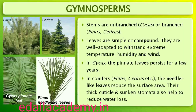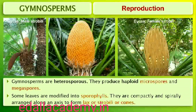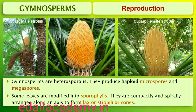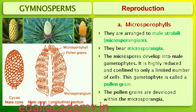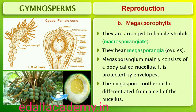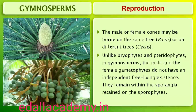The gymnosperms are heterosporous; they produce haploid microspores and megaspores. The two kinds of spores are produced within sporangia that are borne on sporophylls, which are arranged spirally along an axis to form lax or compact strobili or cones. The strobili bearing microsporophylls and microsporangia are called microsporangiate or male strobili. The microspores develop into a male gametophytic generation which is highly reduced and confined to only a limited number of cells. This reduced gametophyte is called a pollen grain; its development takes place within the microsporangium. The cones bearing megasporophylls with ovules or megasporangia are called megasporangiate or female strobili. The male or female cones or strobili may be borne on the same tree (Pinus); however, in Cycas, male cones and megasporophylls are borne on different trees.